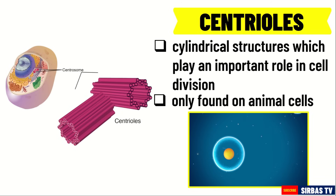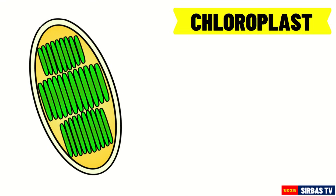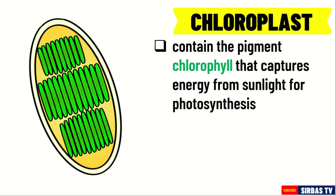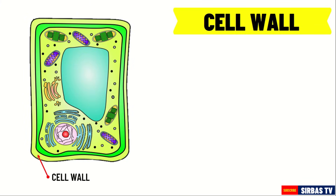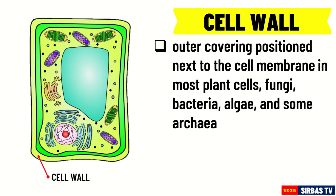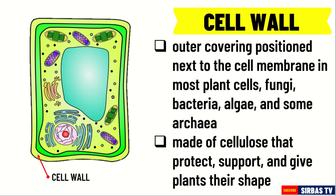The next structures are parts that can only be found in plant cells. First is chloroplasts. Chloroplasts contain the pigment chlorophyll that captures energy from sunlight for photosynthesis. Therefore, the chloroplast is the site of photosynthesis — it is the process through which plants produce their own food. Animal cells have no chloroplasts, thus animals cannot make their own food. The second is cell wall. Cell wall is the outer covering positioned next to the cell membrane in most plant cells, fungi, bacteria, algae, and some archaea. Plants have cell walls made of cellulose that protect, support, and give them shape.